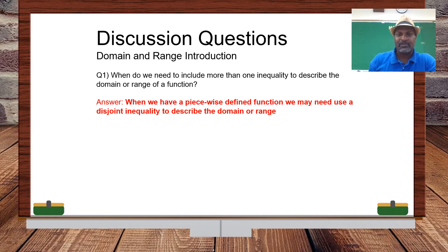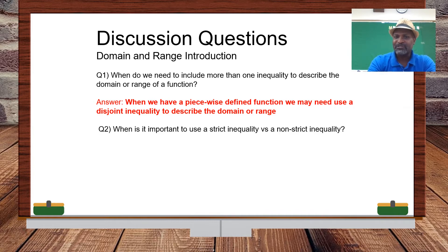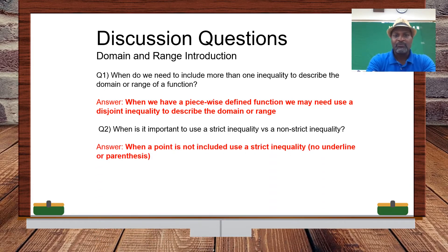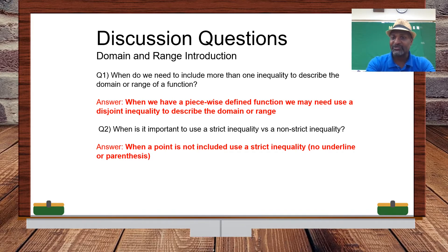Next question: when is it important to use a strict inequality versus a non-strict inequality? A strict inequality means strictly less than or strictly greater than. A non-strict inequality means less than or equal to, or greater than or equal to. When you have a point in the domain or range that is not included, we use a strict inequality — strictly less than or greater than — and you do not underline it.